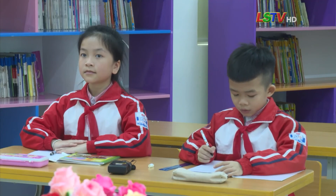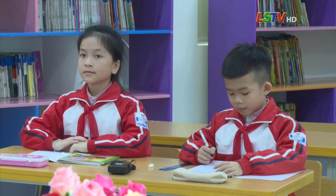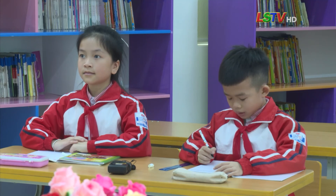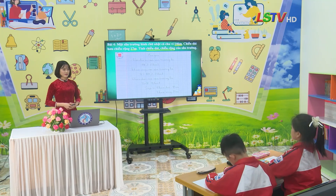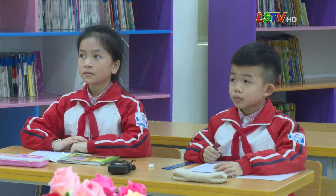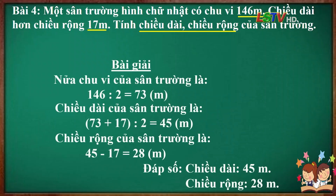Có bạn nào có cách giải khác không? Em thưa cô, em có cách giải khác: nửa chu vi của sân trường là 146 chia 2 bằng 73m. Chiều dài của sân trường là (73 cộng 17) chia 2 bằng 45m. Chiều rộng của sân trường là 45 trừ 17 bằng 28m. Đáp số: chiều dài 45m, chiều rộng 28m. Bài làm của em đúng rồi đấy. Cô mời các em quan sát trên màn hình để đối chiếu kết quả bài làm của mình.